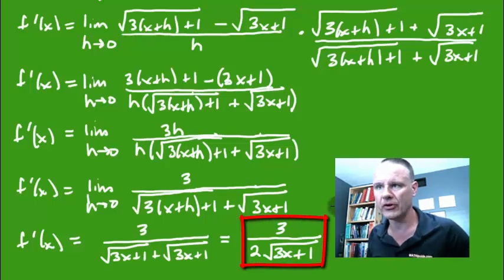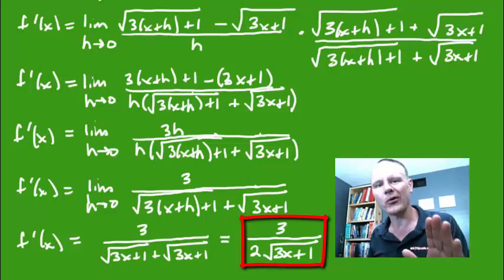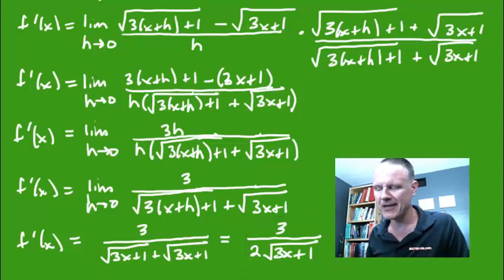There's the answer to the original problem. So when you take the derivative of a radical, that's how you do it. The long way, anyway. This is the way you would do it before you know of any shortcuts.